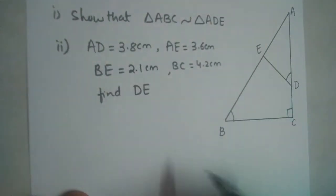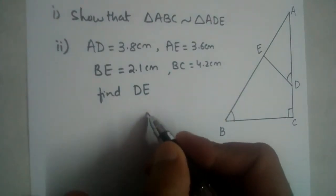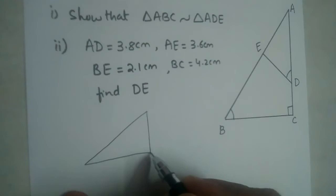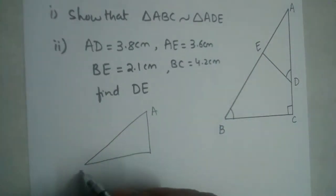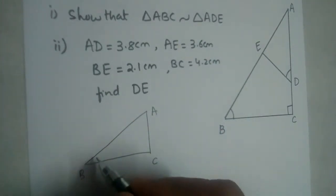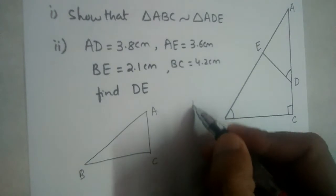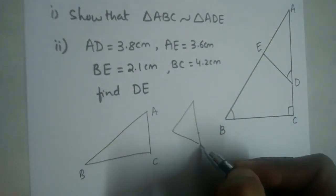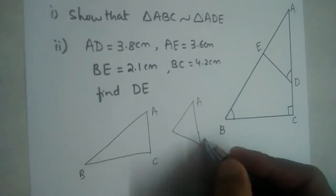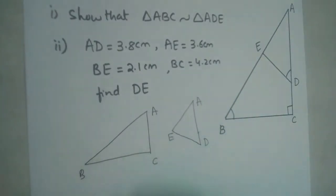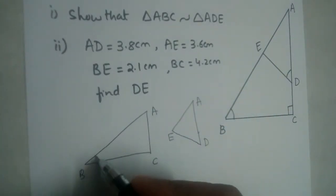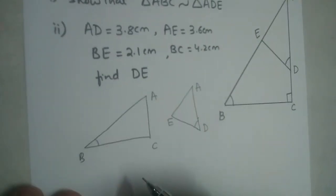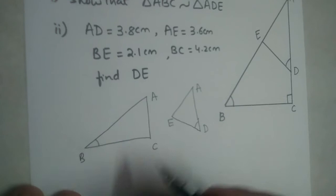There are two triangles in this, so let us draw those two triangles again here — triangle ABC and triangle ADE. Given that angle B is equal to angle D. This is given.